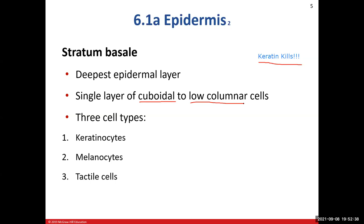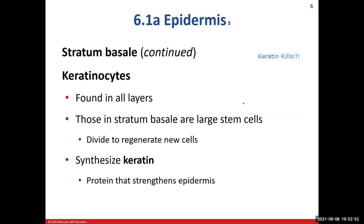There are three types of cells in the stratum basale — easy to remember because stratum basale begins with B, so does bottom, and this is the bottom-most layer. First are keratinocytes — the predominant cell type. Then melanocytes. Then tactile cells. In the stratum basale, keratinocytes start off as stem cells, which means these cells are constantly regenerating and dividing.